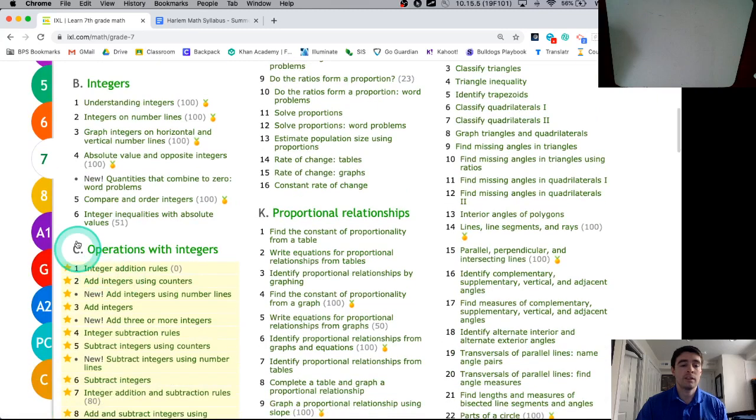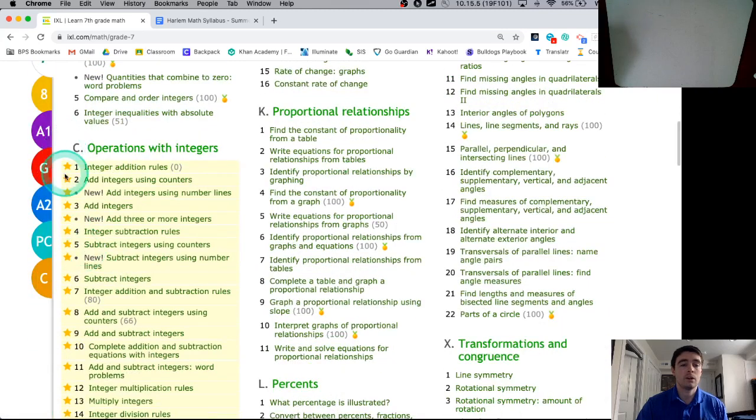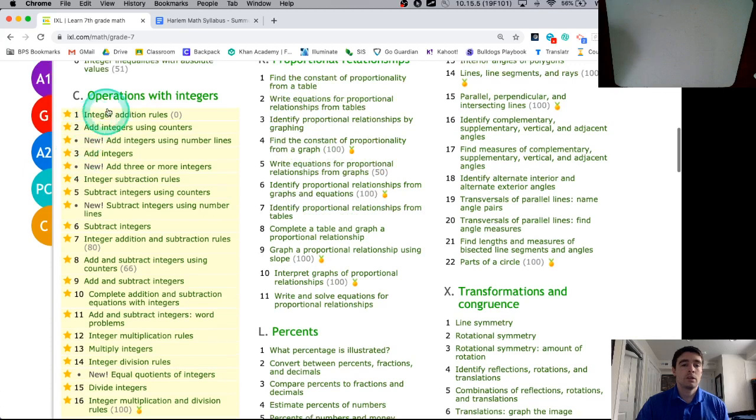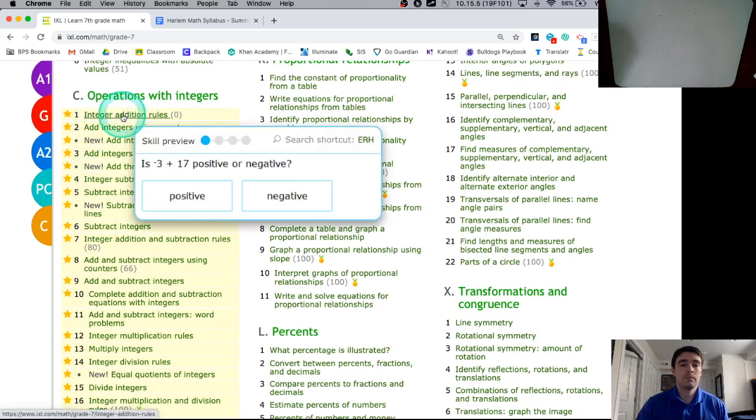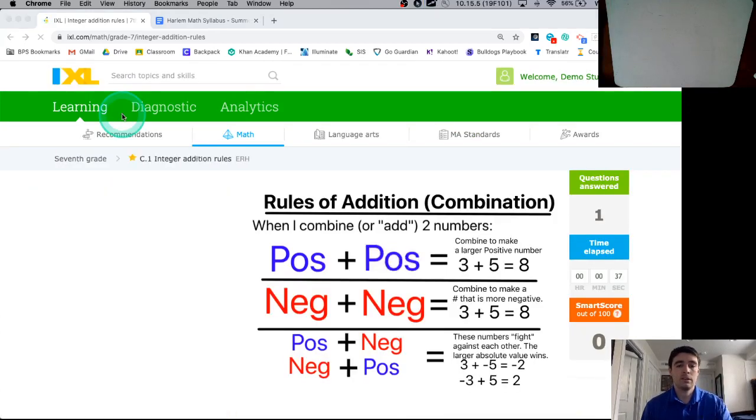And if you scroll down, you should see gold stars next to cluster C, all the ones that are the letter C. So we're taking a look at C1, the very first one. And while that loads up, we're going to have a quick 30-second discussion about some of the rules for addition.